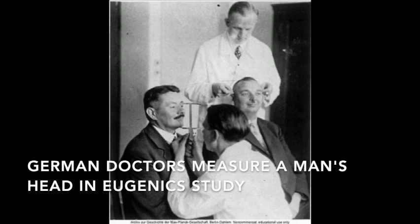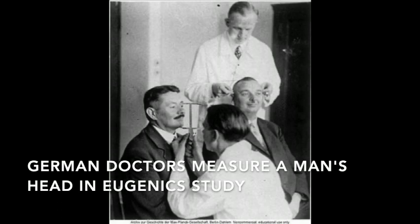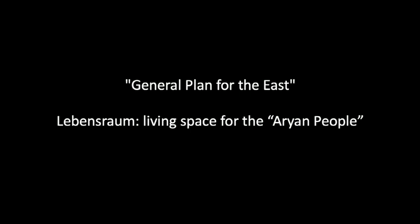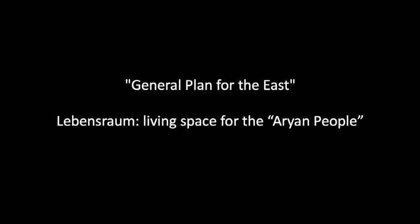Hitler wanted a place in Eastern Europe where all of the racially purified Aryan race could live together. This concept of an Aryan living space was called Lebensraum. Lebensraum was part of a bigger Nazi plan called the General Plan for the East. This plan was the blueprint and justification for killing millions of Slavs and Jews in order to expand the territory for the German people. Hitler wanted his Lebensraum to be east of Poland in Soviet territory, but he had to go through Poland to get there.